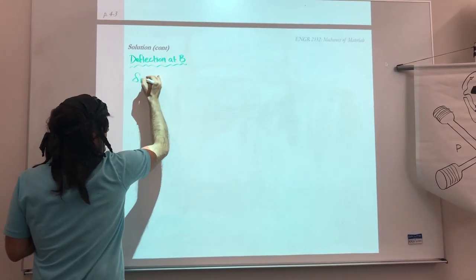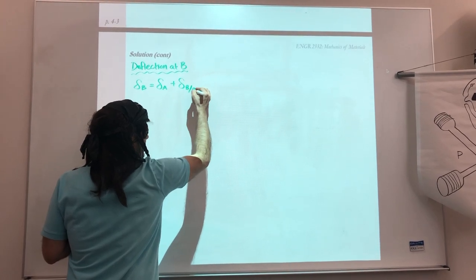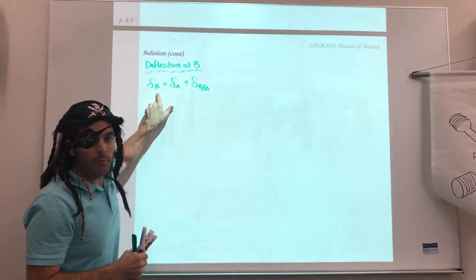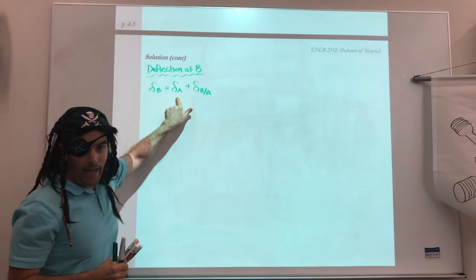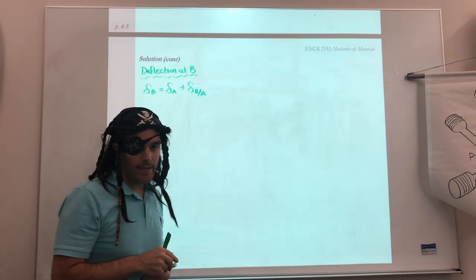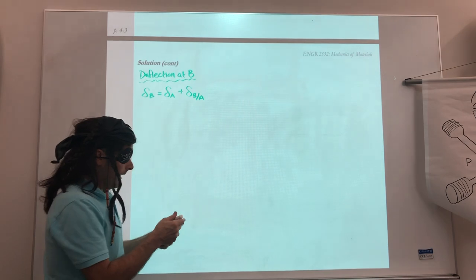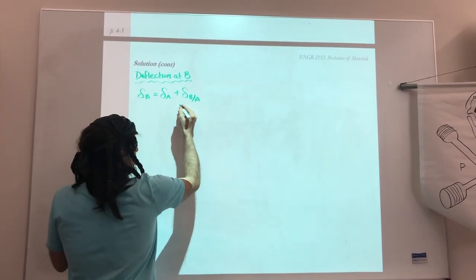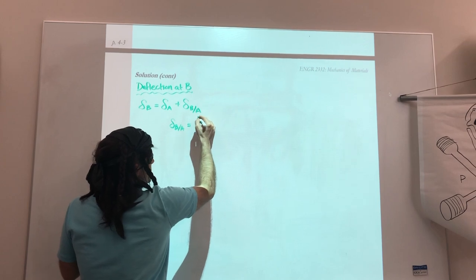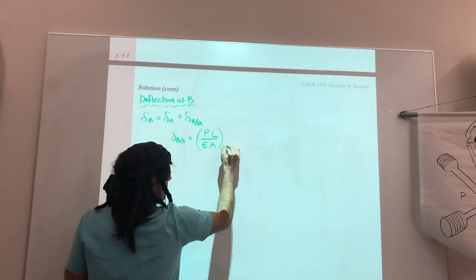So I say deflection at B is equal to the deflection that occurred at A plus the deflection of B relative to point A. So this would be my nomenclature where I would be describing that the deflection, the total amount of deflection at B, is equal to whatever happened at A plus the change from B to A. So this is what we call compatibility equation and we'll talk more about that in the next lesson. But hopefully this makes sense to you.